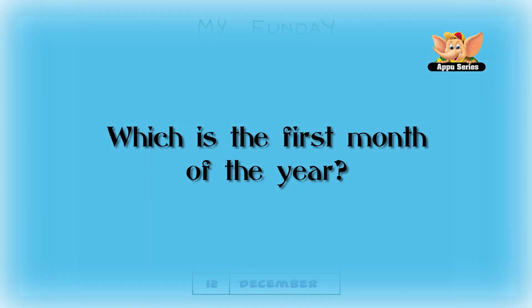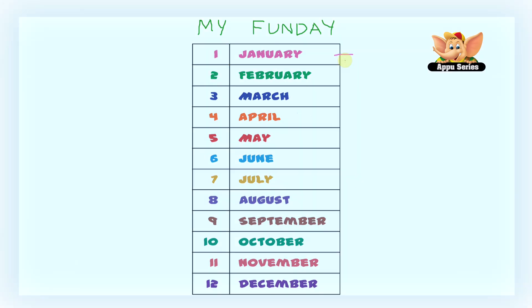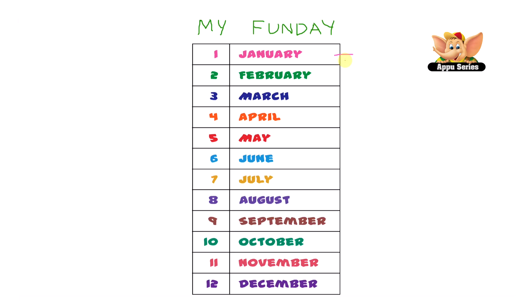Which is the first month of the year? If we look at the chart, we'll see that the first month is January. So January is the first month of the year. Which is the fourth month of the year? Number four on the chart is the fourth month of the year, which is April.